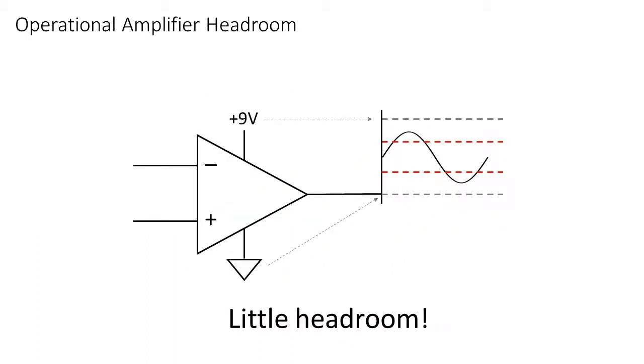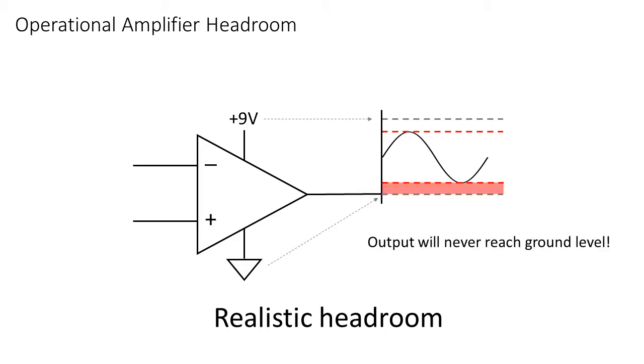The output swing is also called the headroom of an op-amp. The closer you are able to get the output signal swing to the power supply rails, the more headroom is available. But notice how it's impossible to get the output of an op-amp to ground in a single supply system. This can cause issues in digital systems or other circuitry, where it's important to have signals at ground level.